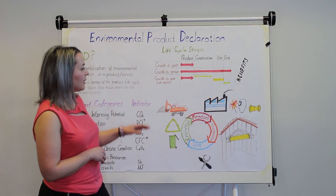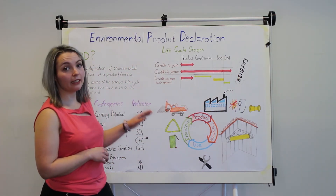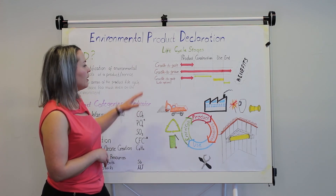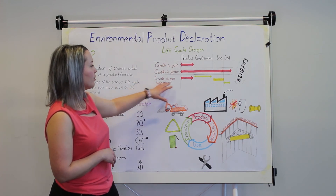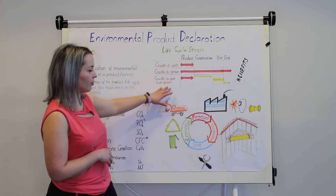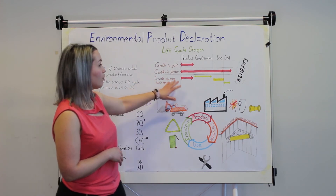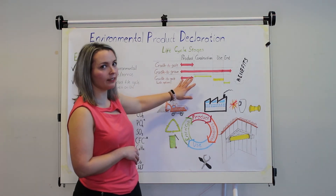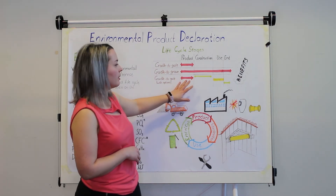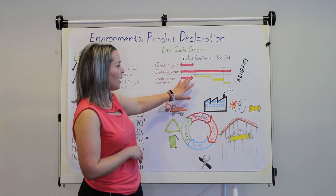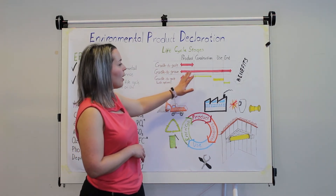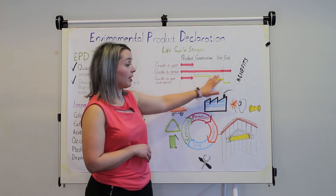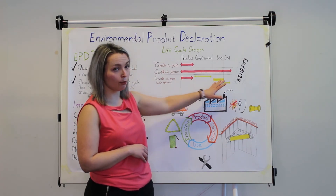The final type of an EPD is cradle to gate with options. As mentioned before, the product stage is default and is the minimum requirement, so any of the other stages or sub-stages are optional.